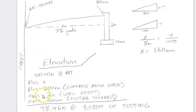We have 2 meters taken off of this value, and then 300 millimeters, or 0.3 meters. We get an elevation at the bottom of the footing of 98.46 meters. That's basically the gist of it.